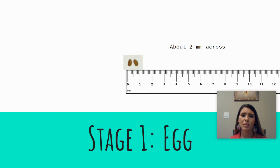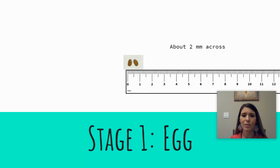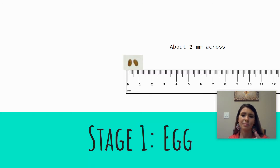Stage one is the egg. It is about two millimeters across — that's very tiny and about the size of the tip of your pinky.